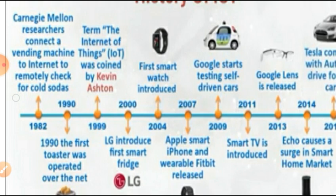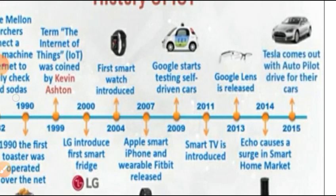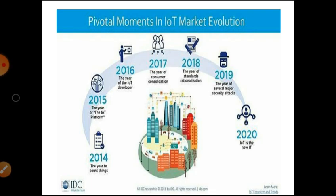In 2007, Apple's smartphone and the wearable Fitbit were released. In 2009, Google started testing self-driving cars. In 2011, smart TV technology was introduced. In 2013, Google Glass was released. In 2014, Amazon Echo caused a share in the smart home market. In 2015, Tesla came out with autopilot driving for their cars.